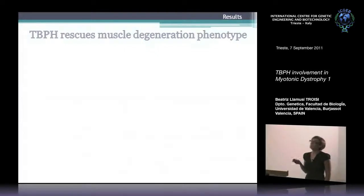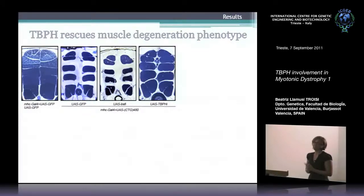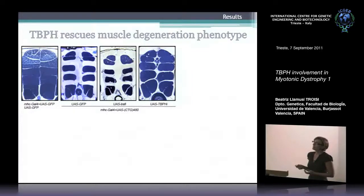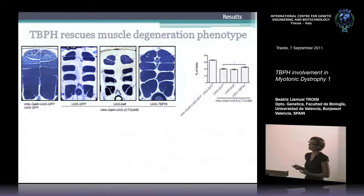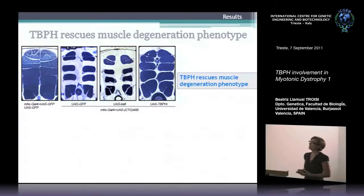Now that we know TBPH is expressed in muscles, we wanted to see if it was related to the muscle degeneration phenotype in CTG-expressing flies. In transversal sections, CTG expression causes smaller muscles due to loss of fibers. When we interfered BSF in CTG-expressing flies, we obtained a very similar muscle to the one expressing only CTGs — no significant differences in quantification. But interfering TBPH, we obtained larger muscles — about a 15% recovery of the mean muscle size. TBPH interference rescues the muscle degeneration phenotype.